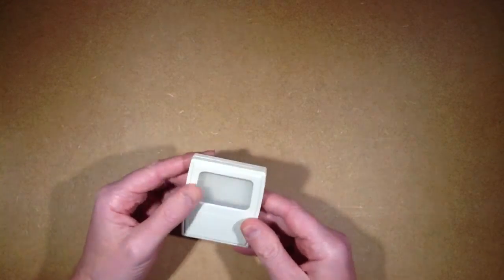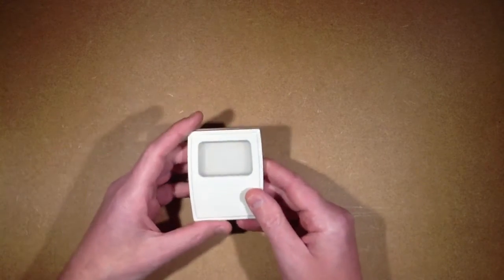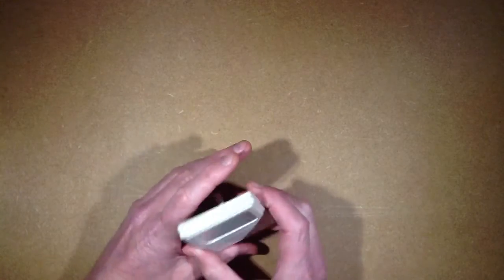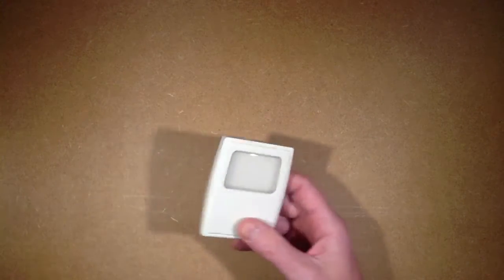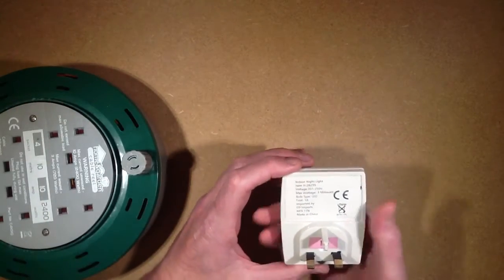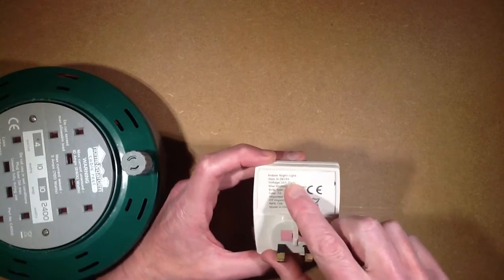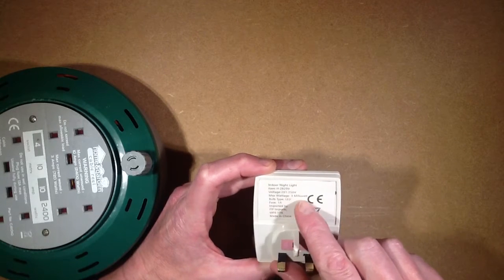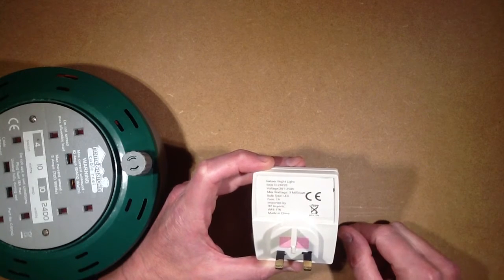It was available in a few different colors and initially I thought maybe it was one of the cheap electroluminescent ones, but it does appear to be LED because I've had it lit. In fact, I have it lit right now. It claims indoor nightlight, voltage 201 to 250 volts, max wattage 3 milliwatt. That seems quite low.